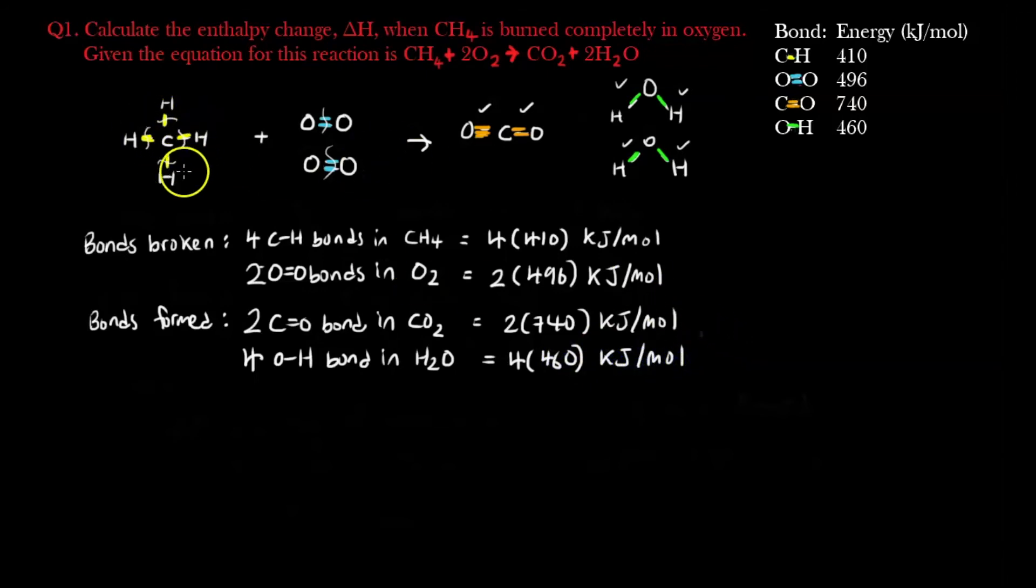To break 4 bonds here, I times 4, to break 2 bonds here, I times 2, to form 2 bonds here, I times 2, to form 4 bonds here, I times 4. That's where all the numbers come from, how many numbers of bonds required to break or form.